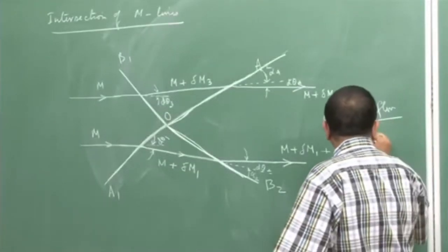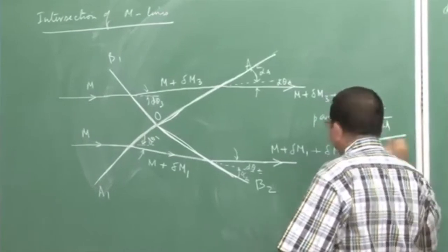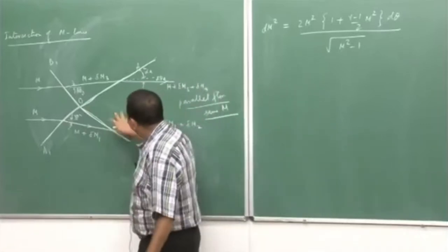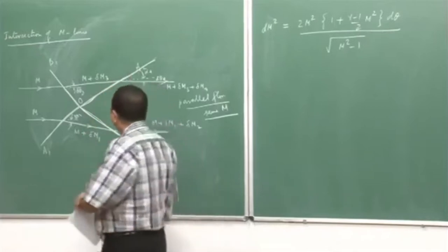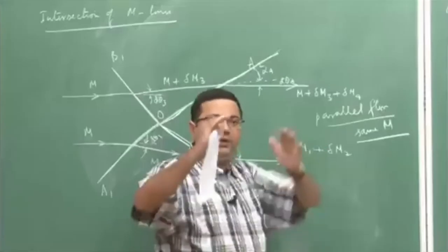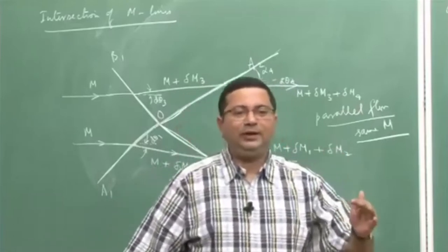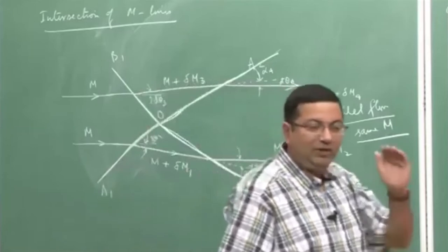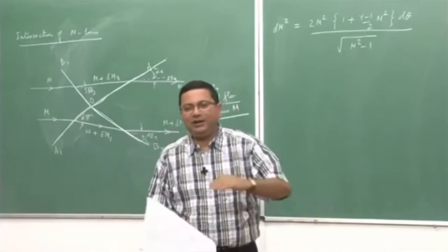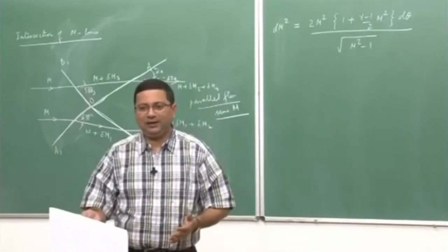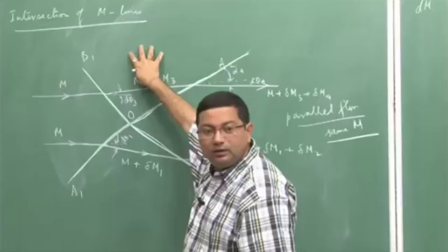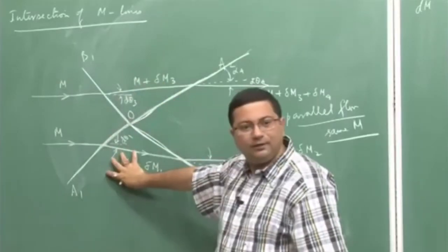Let us say that we design in such a way that the flow becomes parallel. So we have a parallel flow in region A2OB2. At the same time, since we are having a parallel flow, we should have the same Mach number also — that is the requirement: uniform parallel flow. Every region between Mach line crossings should have parallel and uniform flow. We do not want different Mach numbers or non-parallel flow between crossings, because those would generate different Mach lines.